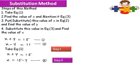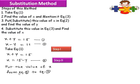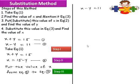The next step is to put or substitute this value of x in equation 2. We need to substitute this value in equation 2. Put the value of x from equation 3 into equation 2. This is step 3. Equation 2 is x minus y is equal to 11. The value of x from equation 3 is 15 minus y, so we write 15 minus y in place of x. This gives 15 minus y, minus y, equals 11.